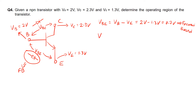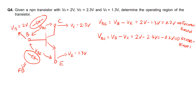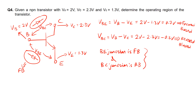Next we calculate Vbc, which is the voltage difference between point B and point C: 2 volts minus 2.3 volts, giving us negative 0.3 volts. If you apply negative 0.3 volts to this diode at the BC junction, the diode will actually be reverse biased. Since the BE junction is forward biased and the BC junction is reverse biased, from the table in question 3 we can determine that the transistor is in the active region.